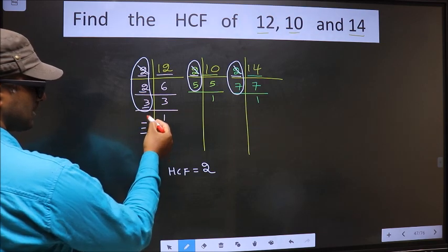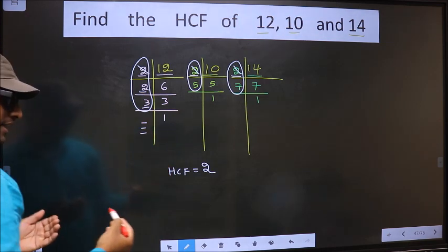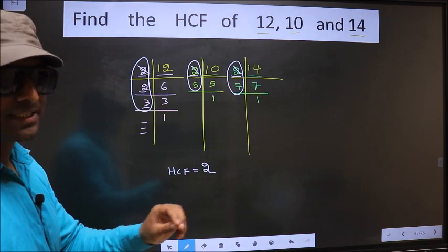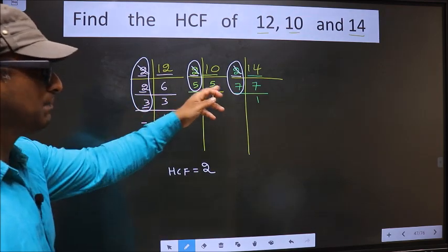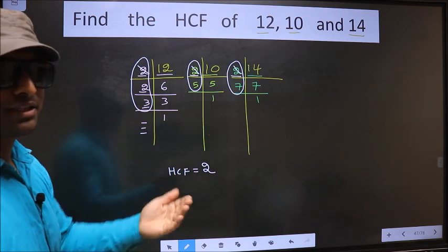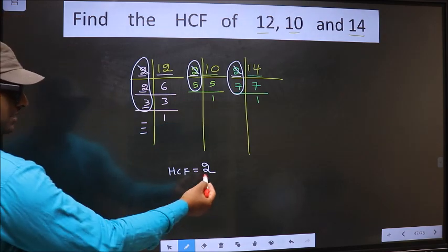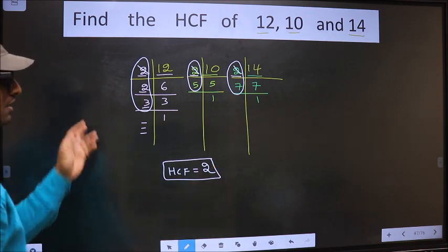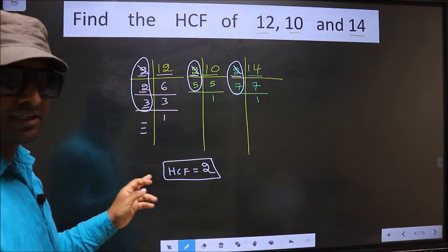No more numbers are left. Therefore, only one number, 2, is present in all 3 places. Therefore, 2 itself is our HCF. Am I clear?